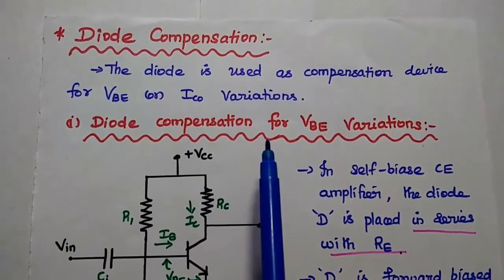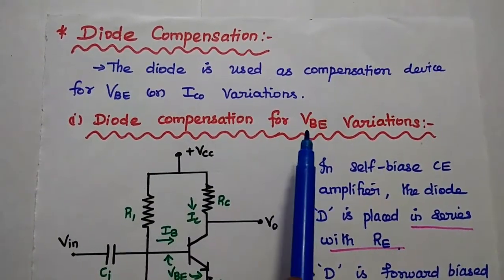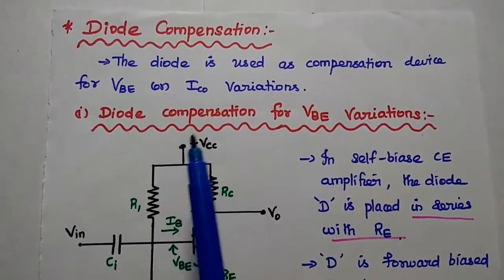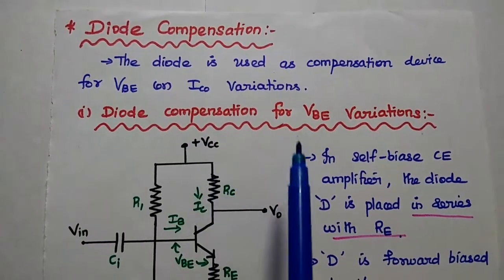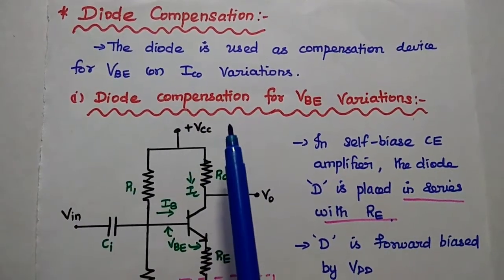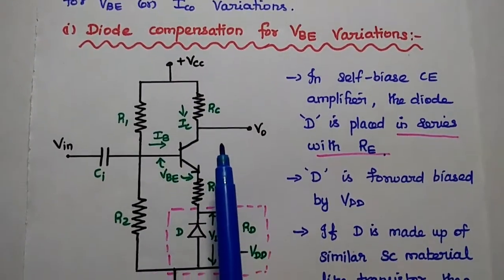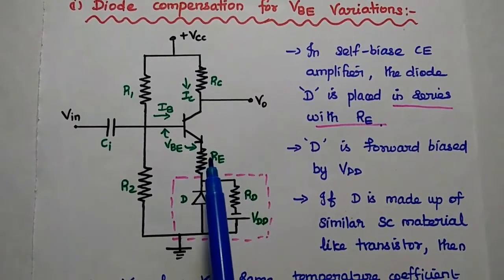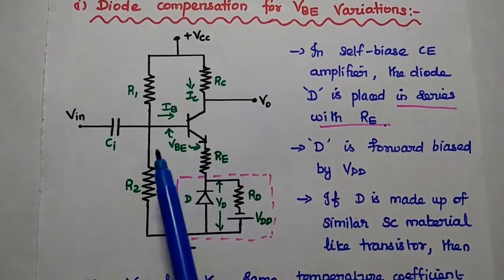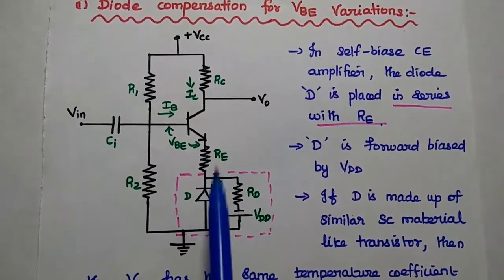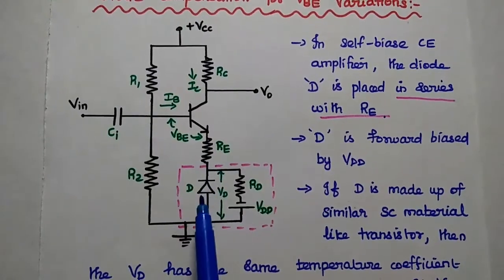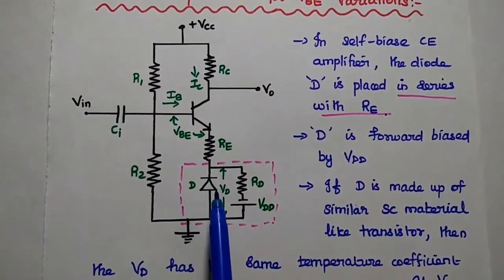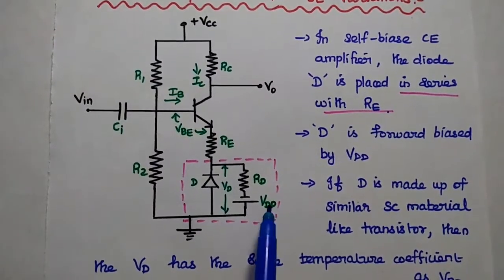Next is diode compensation. In this method, the diode is used as a compensation device to compensate the variations in VBE or ICO — that is, variations in base-emitter voltage or leakage current (reverse saturation current). For diode compensation for VBE variation, the diode is connected in series with the emitter resistor. This diode is forward biased by the supply voltage VDD, with negative to negative and positive to positive connections.